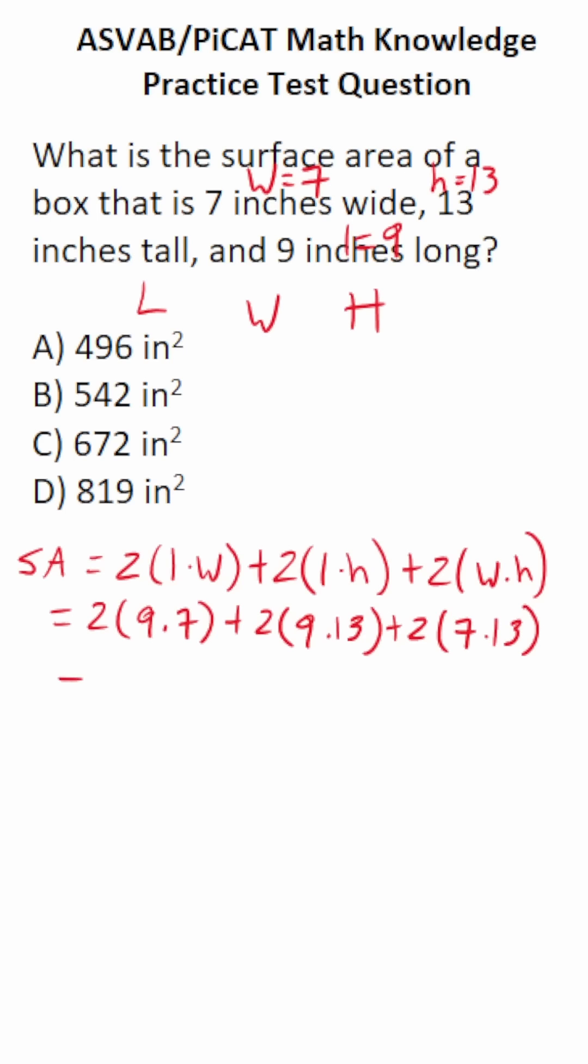All we have to do is work this out. 9 times 7, you should be able to do mentally using your times tables. That's going to be 63.